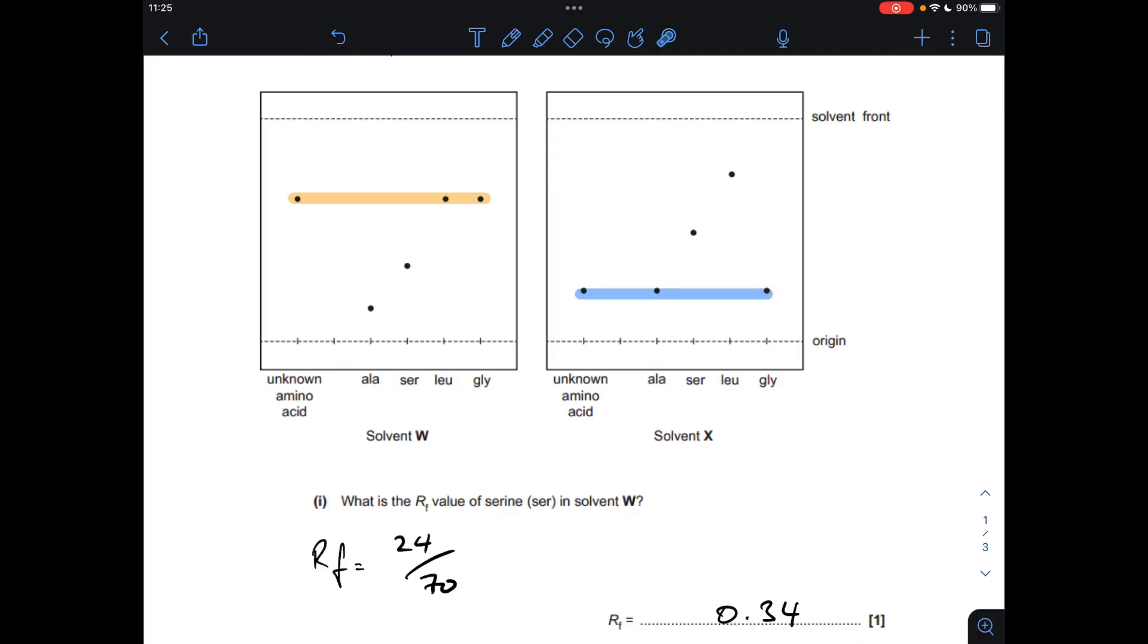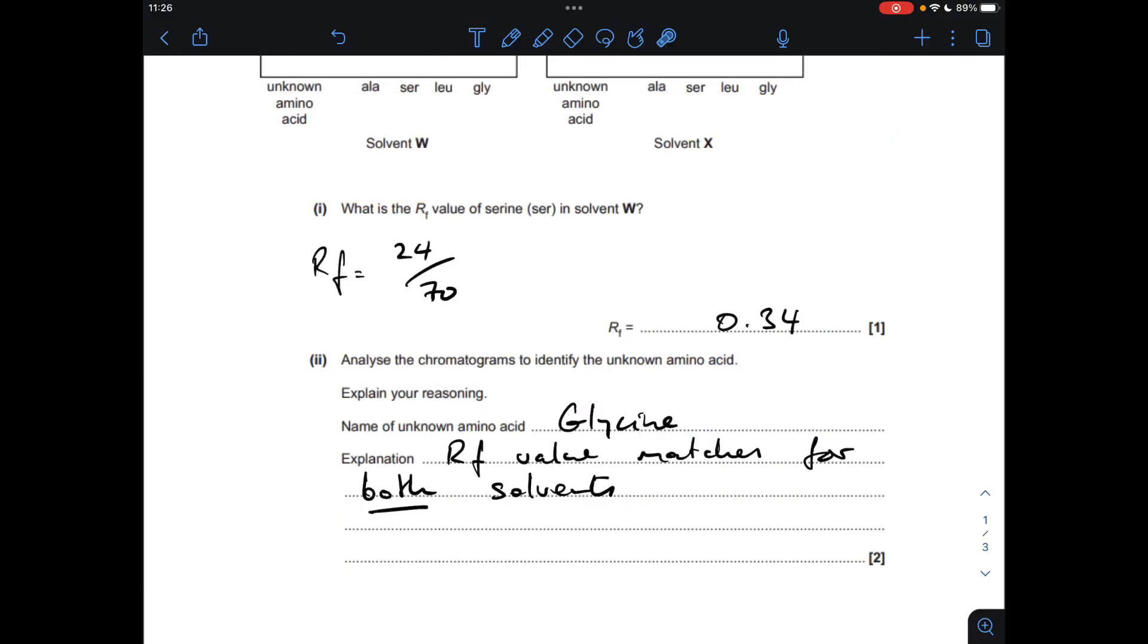The common one in there is glycine, so the unknown amino acid is glycine. The explanation I'm given is it's glycine because the RF value matches for both solvents. The important bit is the fact that it's both solvents we've got the match.